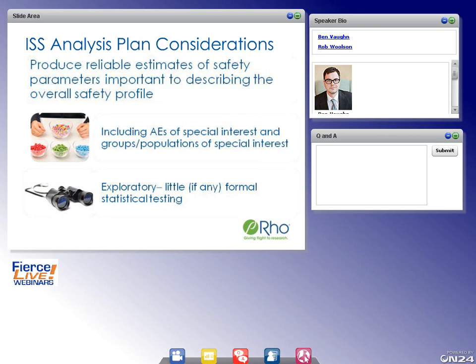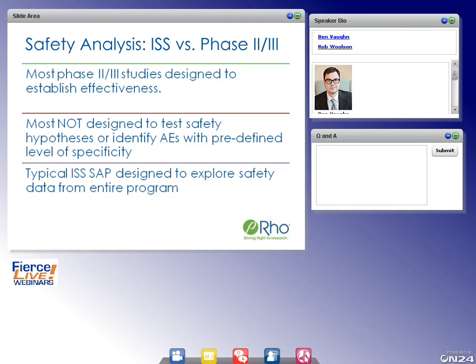How is an ISS different from Phase II or Phase III analyses? Most Phase II and Phase III studies are designed to establish effectiveness — they are not designed to test safety hypotheses or identify adverse events with a predefined level of specificity. Formal safety comparisons are limited. The ISS is intended to address that deficiency by combining and aggregating data, and that should be kept in mind when not repeating Phase II or Phase III analyses. The typical ISS SAP is designed to explore safety data from the entire program.